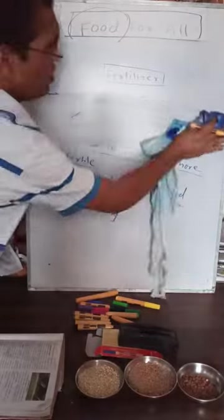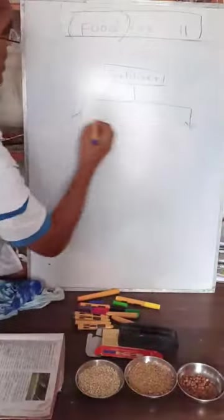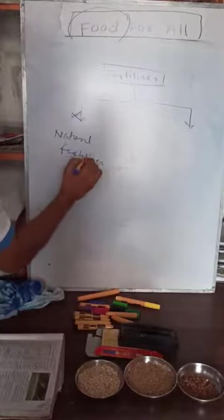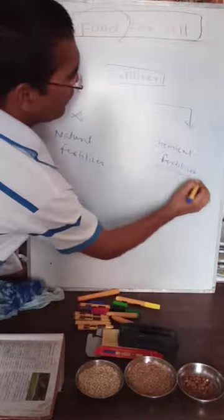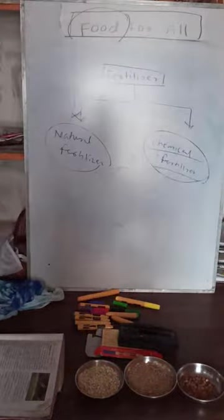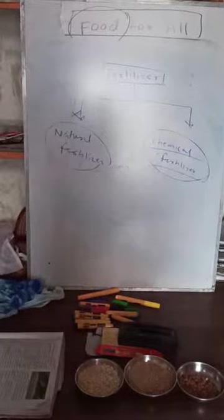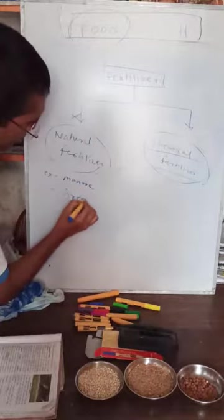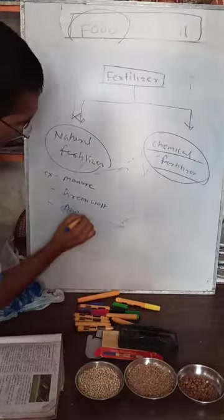There are two types of fertilizers. One is natural fertilizer and the second is chemical fertilizer. Natural fertilizer includes manure — green waste and cow dung or animal dung. These things are used as natural fertilizer. Natural fertilizer is very important; it is like nutrition to the plant.